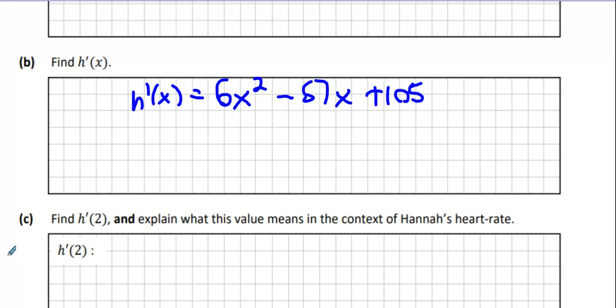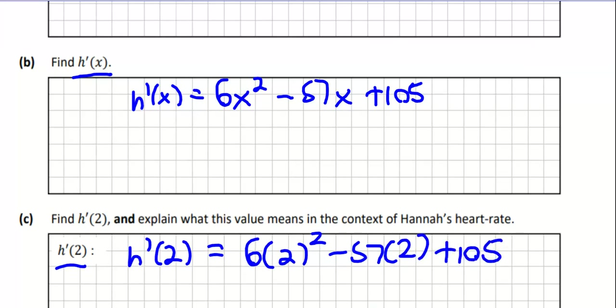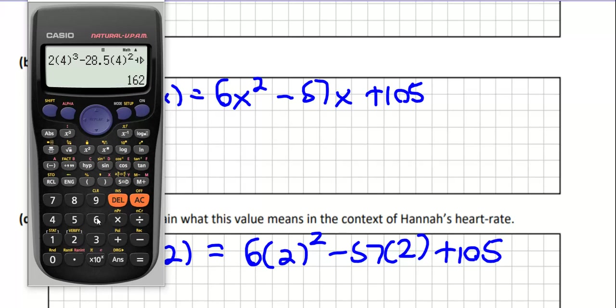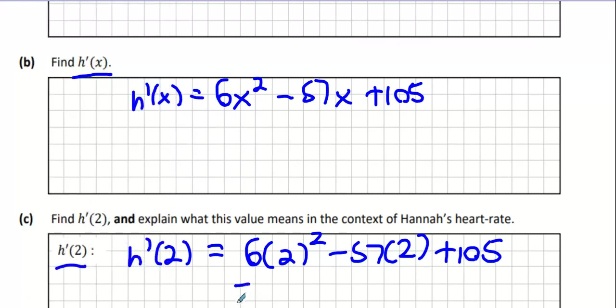Find out what h dash 2 means. Well the difference between h dash x and h dash 2 is the fact that x gets replaced with 2. So it's 6 times 2 squared minus 57 times 2 plus 105. And we get 15 beats per minute.